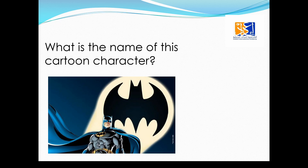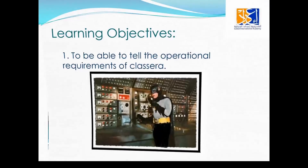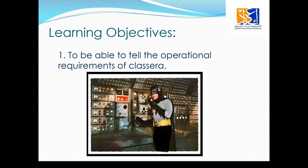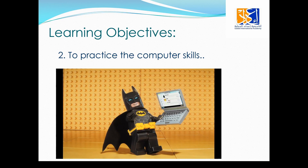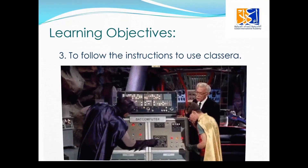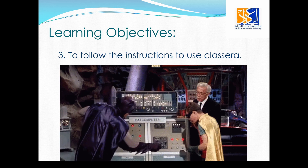Be focused and see what you are going to see on the screen now. Oh, what is this cartoon character? Is this a Batman? Yes, this is Batman. You all have seen the cartoons of Batman. So let's see what will be our learning objectives. Learning objective number one: to be able to tell the operational requirements of Classera. Number two: to practice the computer skills — you can only use Classera if you know how to use computers. Number three: to follow instructions to use Classera — listen carefully to how and what instructions we have to follow. These three are our learning objectives.